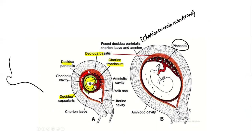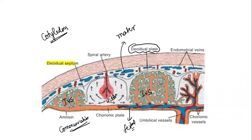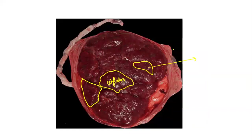Initially the chorionic and amniotic cavities are separated from the uterine lumen by decidua capsularis. As fetal growth occurs, the chorionic cavity merges with the amniotic cavity forming a single cavity — the chorioamnion membrane. The decidua capsularis ruptures and directly communicates with decidua parietalis, while chorion frondosum fuses with decidua basalis to form the placenta. The decidual septum divides the placenta into cotyledons.